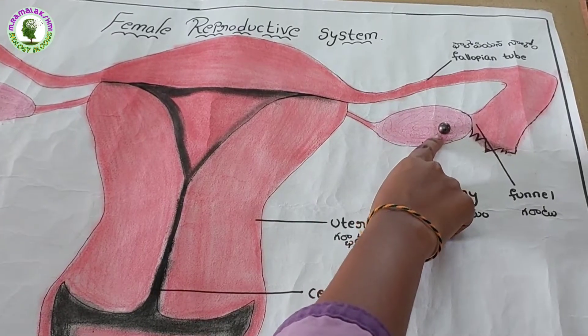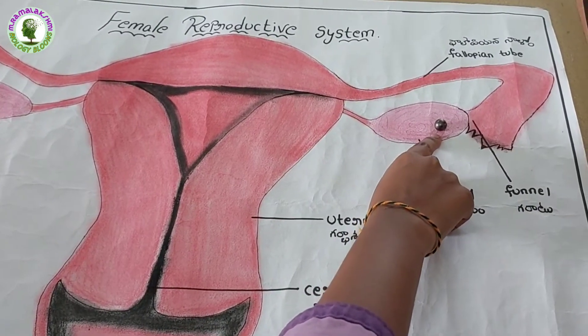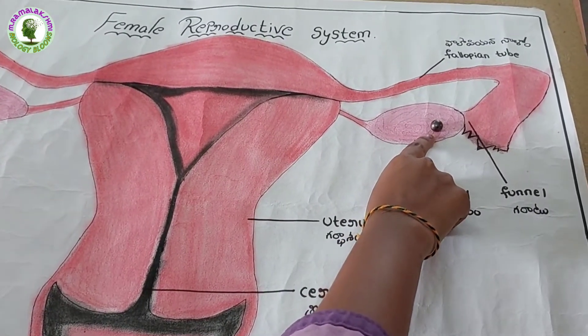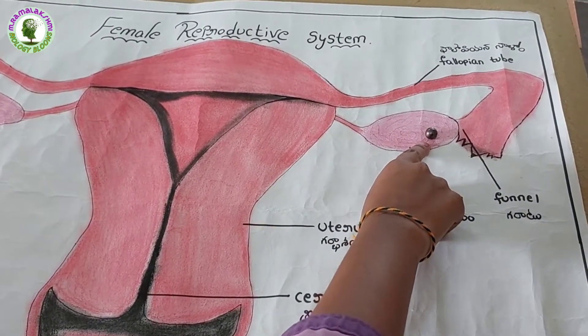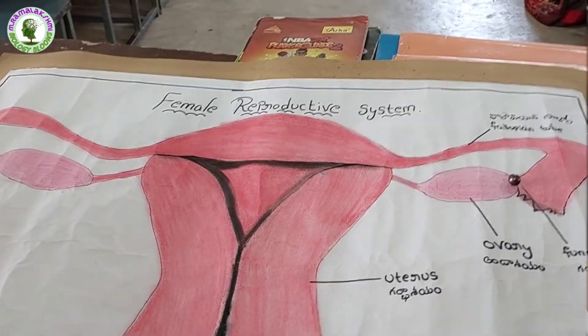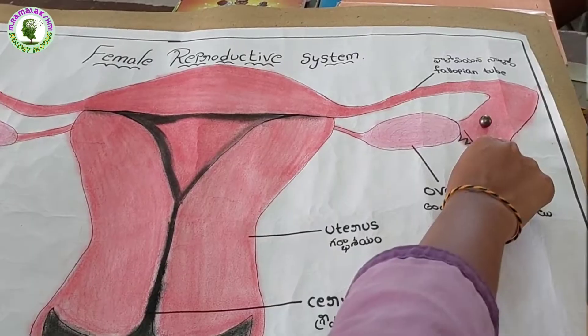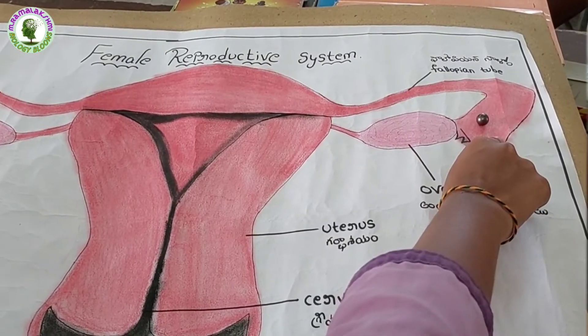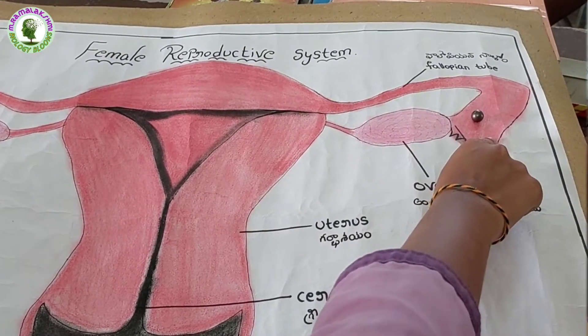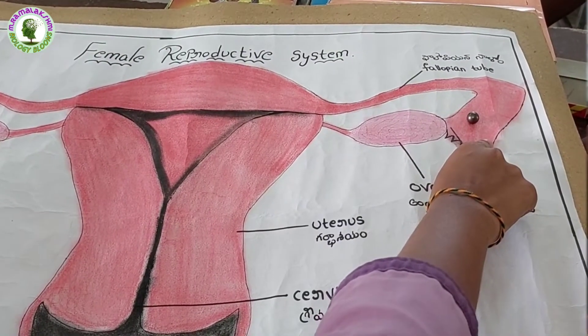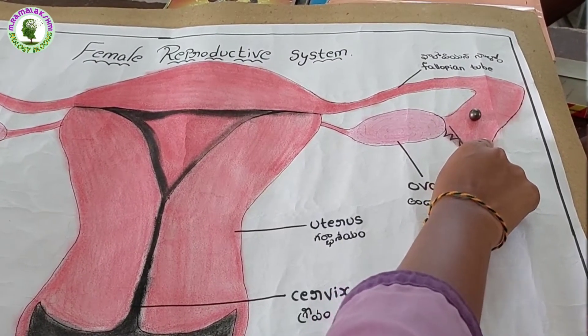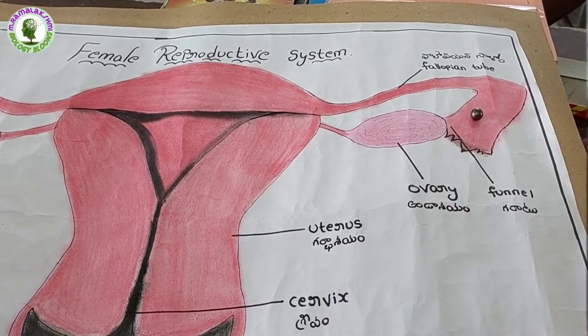A single ovum is usually released on the 14th day of each menstrual cycle. Then it enters the widened funnel of the fallopian tube.